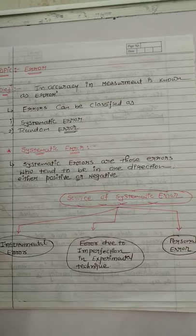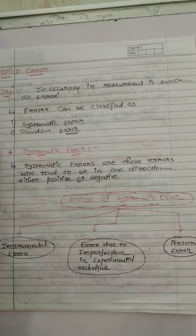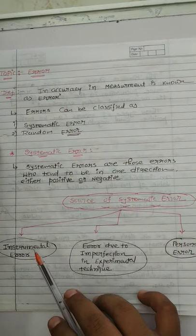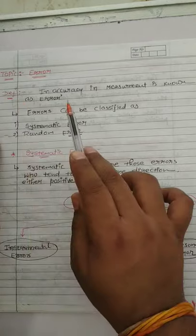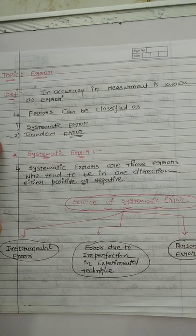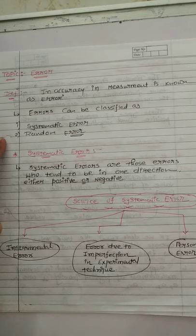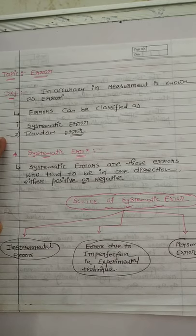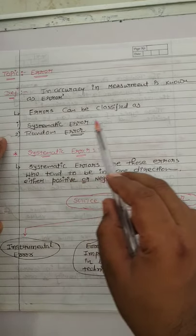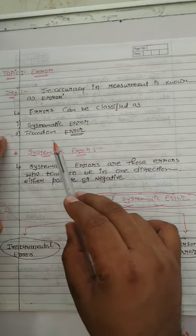Hello dear students, myself Jay Gia. Today I am going to discuss the topic of error. The definition of error: inaccuracy in measurement is known as error — meaning that if you measure something, there will be a fault in it, and its proper value is not exact. Error can be classified into two types: first, systematic error, and second, random error.